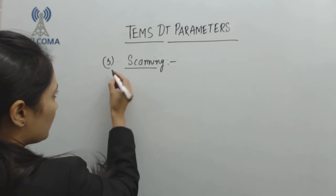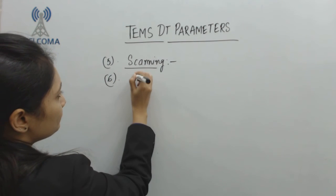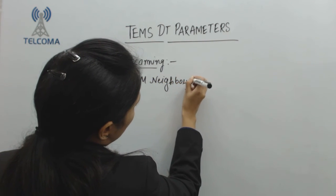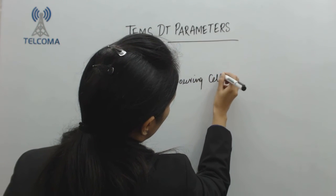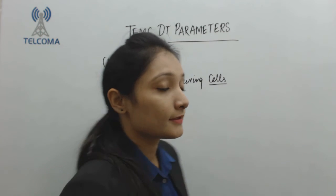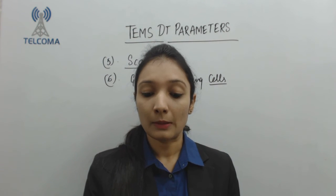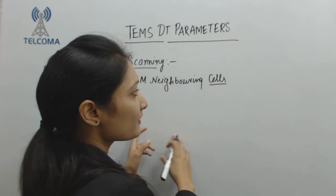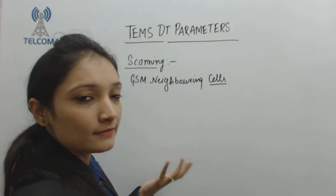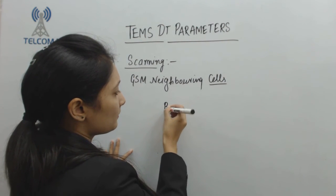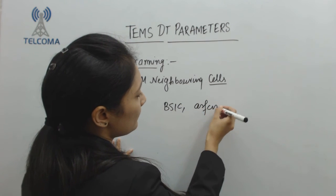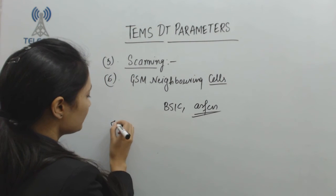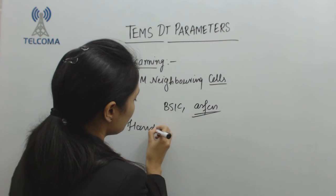You can also check neighboring GSM cells. When there is limited coverage for the UMTS system, the call is transferred from the UMTS system to the GSM system. So an active set update for GSM is needed, which gives information about the BSIC and ARFCN number for the GSM cell.